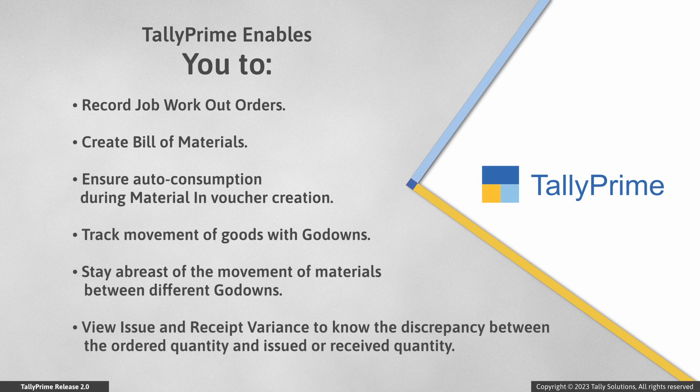As you saw, Tally Prime provides you with all the facilities to record Job Workout orders. You can create a bill of materials and ensure that the components are considered at the time of Material Out Voucher creation. Further, you can ensure auto-consumption during Material In Voucher creation. You can also track movement of goods with godowns created for Job Worker and consumption. You also have a variety of reports to stay abreast of the movement of materials between different godowns. The Issue and Receipt Variance Reports ensure that you stay aware whenever there is a variation between the ordered quantity and issued or received quantity.